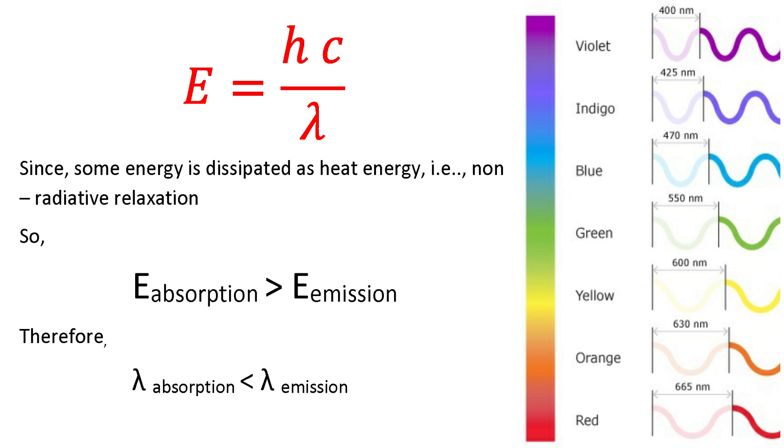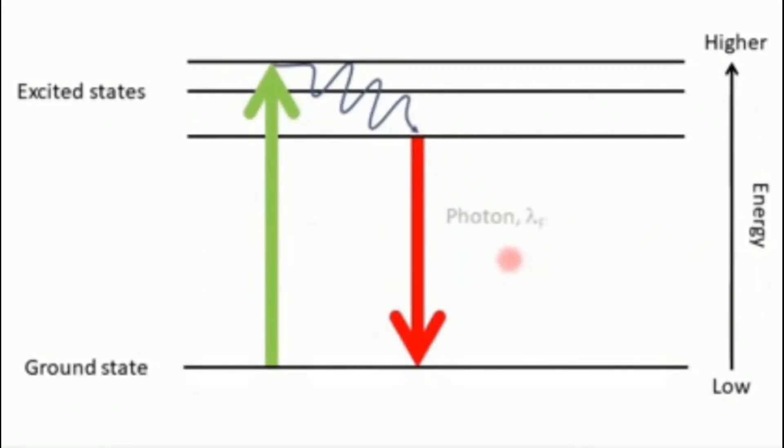And these excited atoms emit their energy in form of light, but light with longer wavelength as it is having less energy than the energy in absorption. Hence the light emerging from the substance has wavelength corresponding to lower energy photons.